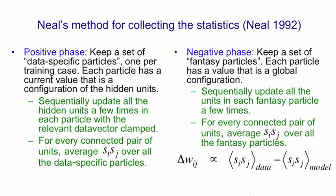The learning rule is then: the change in the weights is proportional to the average you got with data, averaged over all training data, minus the average you got with the fantasy particles when nothing was clamped. This works better than the learning rule that Sinofsky and I introduced, at least for full batch learning.